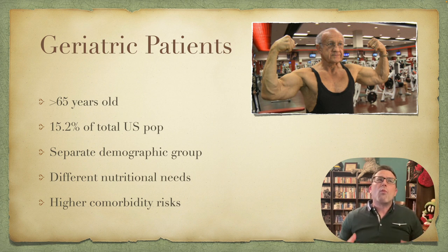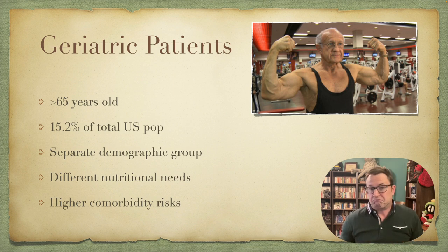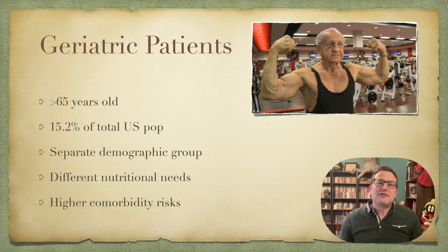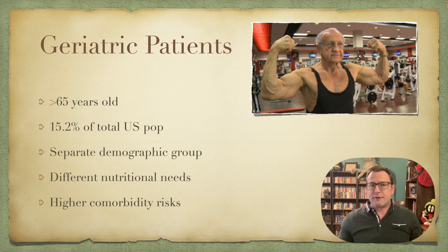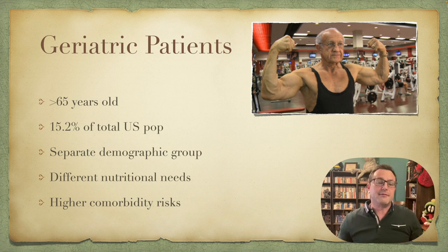So what defines a geriatric patient? Essentially, it is being over 65 — they had to draw the line somewhere, and that's what they picked. The geriatric population makes up 15% of the total U.S. population. They are a separate demographic group, and they have different nutritional needs and a higher comorbidity risk than the average adult. Comorbidity means chances of being sick or chances of developing disease, so they have higher risk factors to develop disease.